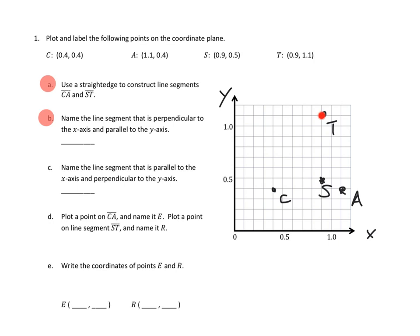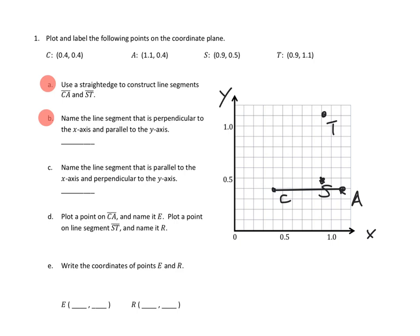Now that we've got our points, we can do some things. For part 1A, we're supposed to use a straight edge to construct line segments CA and ST. I need to get my line tool out and draw a line. I've matched it up and I've got a line segment that joins C to A — there's one of them. And I need another one that goes from S to T, so I'm going to move that into place. That goes right along there from S to T.